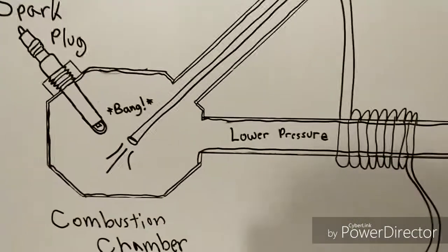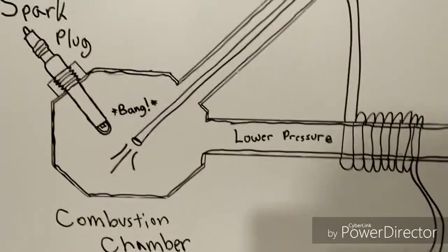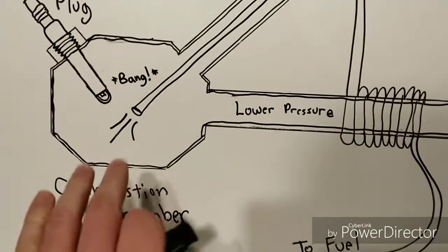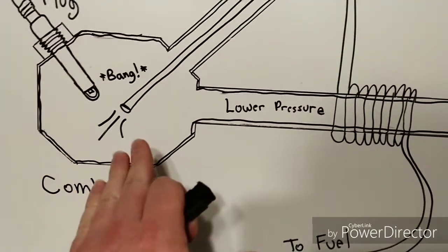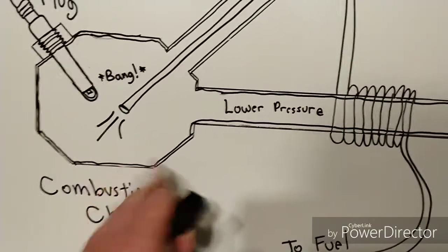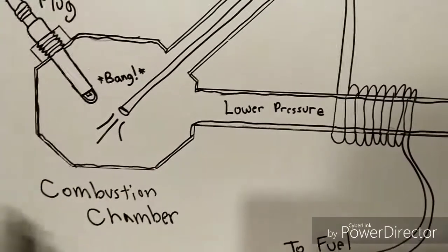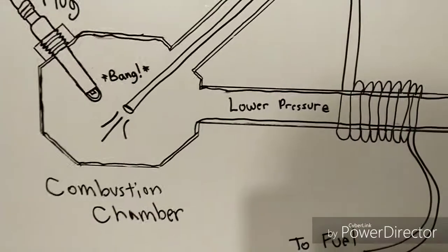Once the air has been forced down there, you have atmospheric air being mixed with a fuel source in the combustion chamber. Oxygen and fuel creates an explosion.